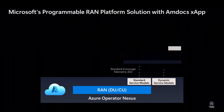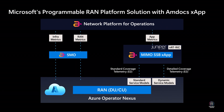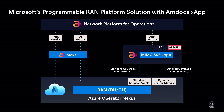RIC X-Apps such as the massive MIMO X-App developed by Amdocs address many common pain points for mobile operators, including coverage. Microsoft's dynamic E2 service models allow X-App developers to create their own service model through custom aggregation of detailed RAN telemetry directly within the RAN. Juniper near real-time RIC provides open APIs to host third-party X-Apps and E2 interfaces towards RAN nodes. Juniper RIC added support for the dynamic E2 service models.